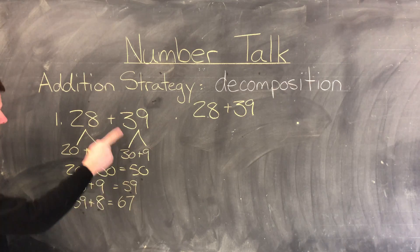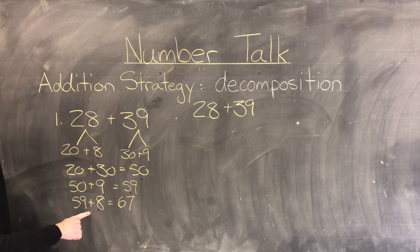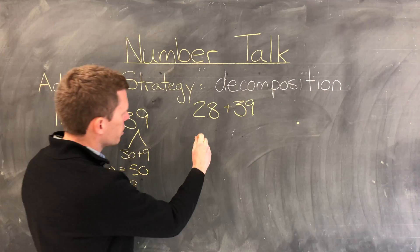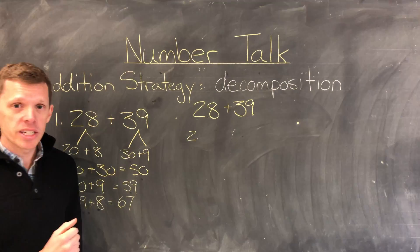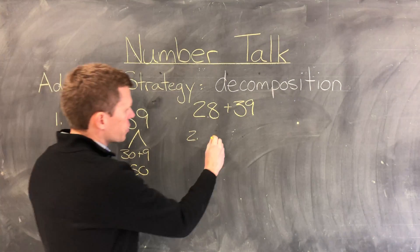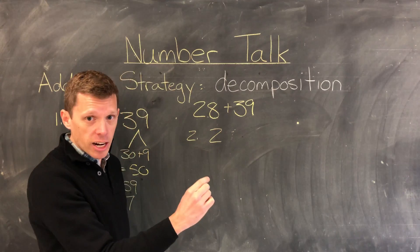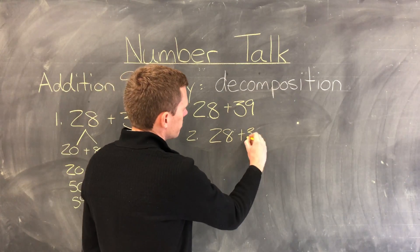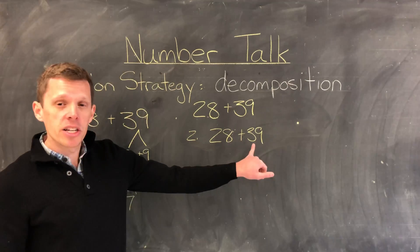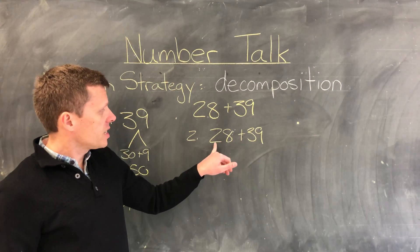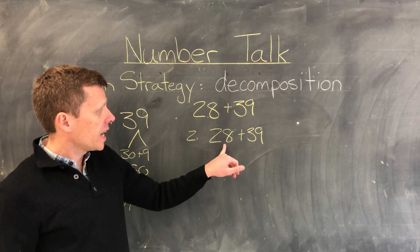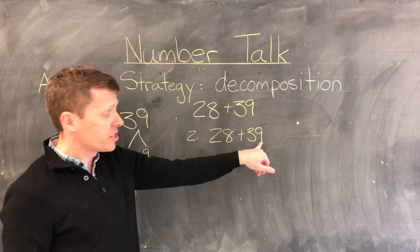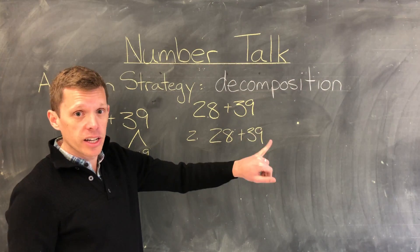So there's our first example of decomposing 28 and 39. Another way I could do this is by decomposing only one of the numbers. I'm going to write the question out again: 28 plus 39. Since 39 is close to 40, I'm going to decompose 28 so I have numbers I can add to 39 to make it into 40.